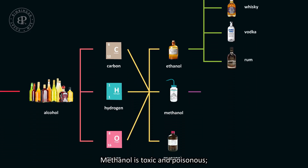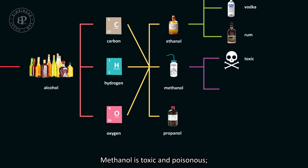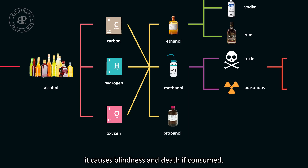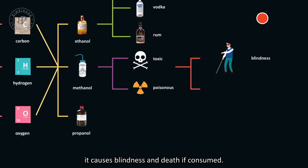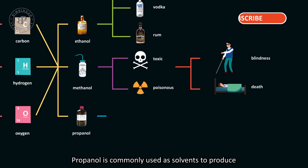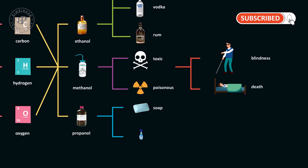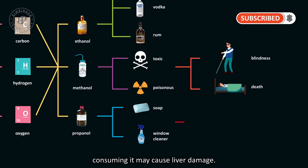Methanol is toxic and poisonous. It causes blindness and death if consumed. Propanol is commonly used as a solvent to produce soaps and window cleaner, and consuming it may cause liver damage.